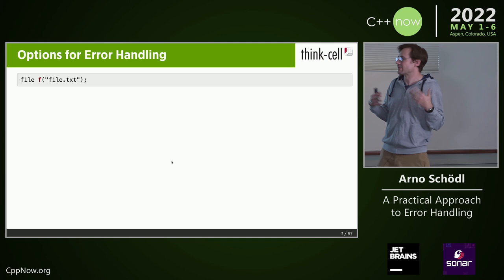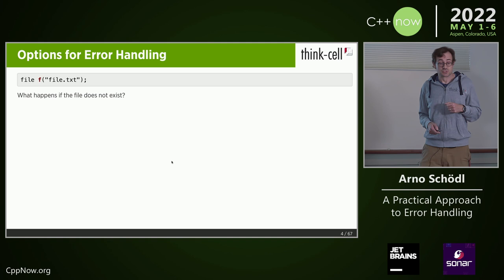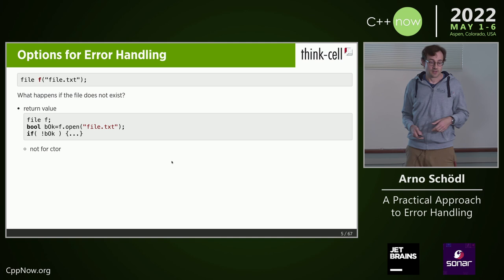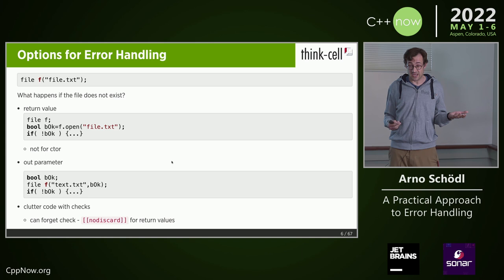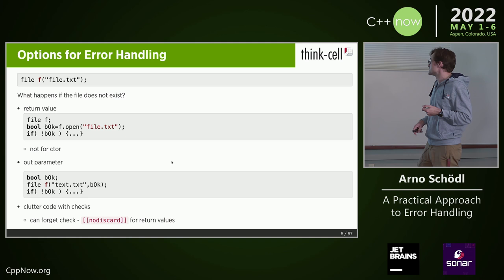Let's say you have a file that's being opened, and we have a file object. What happens if the file doesn't exist? How do you know that? One easy way would be that your open function has some return value. That doesn't work for constructors. For constructors, you could have some out parameter, which is really ugly. It also clutters the code with all kinds of checks. In later C++ versions, you can put no-discard for return values so you don't forget to check, but it's still all not great.